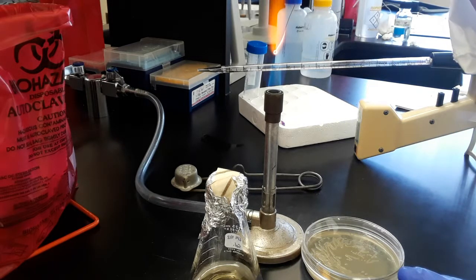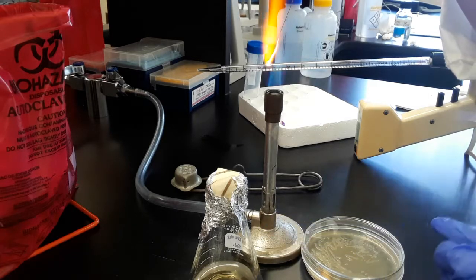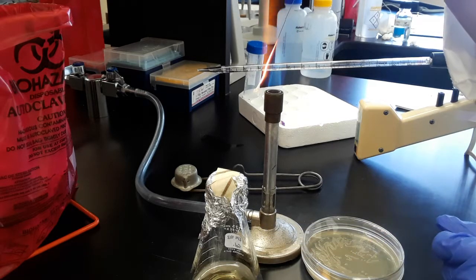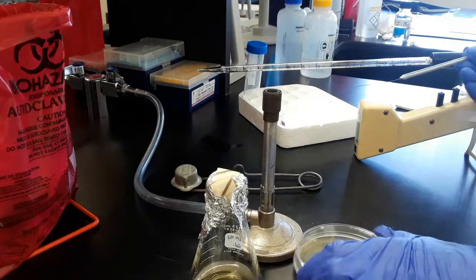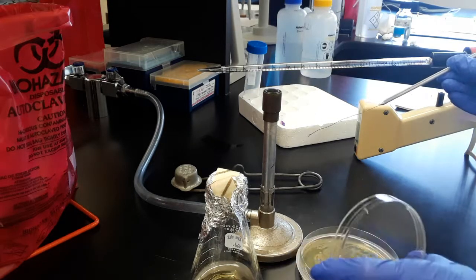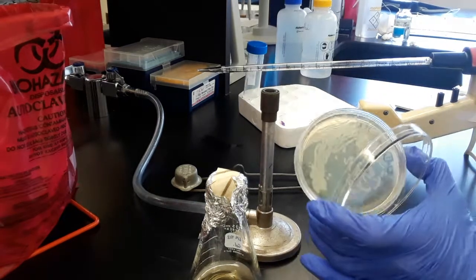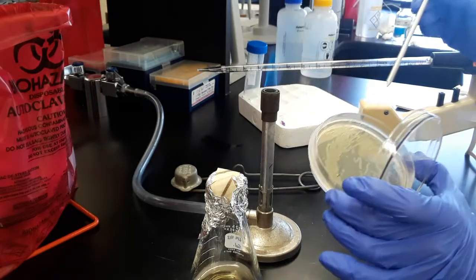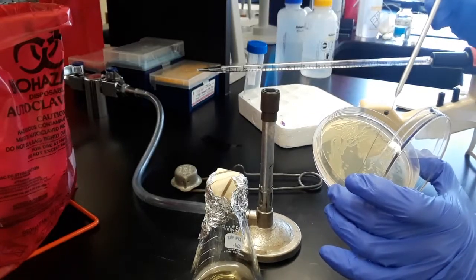What I'm going to do to inoculate this flask from this stock plate is just flame a loop to make sure it's sterile. I can touch it on the side here, away from colonies.